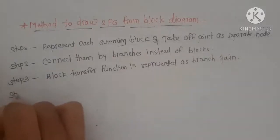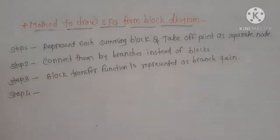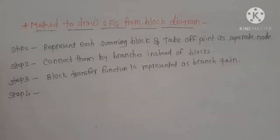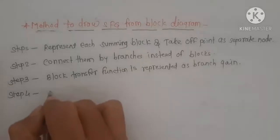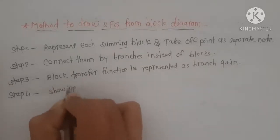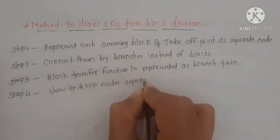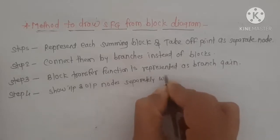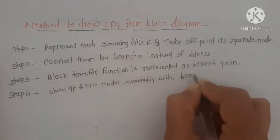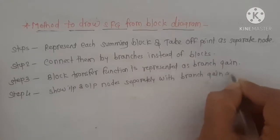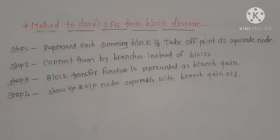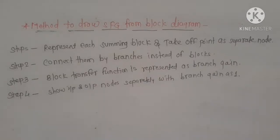And lastly, step four is: show input and output nodes separately with branch gain as 1. So these are the steps to draw the signal flow graph from a given block diagram. Now we will see an example, and then you will get a clear idea about that.